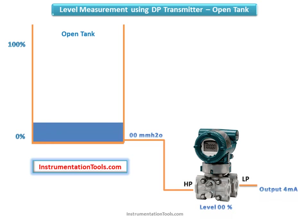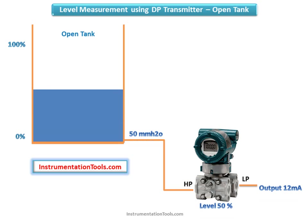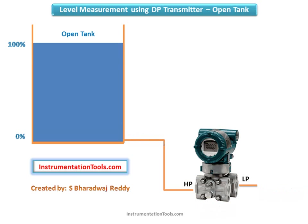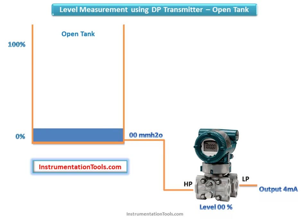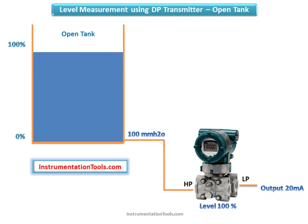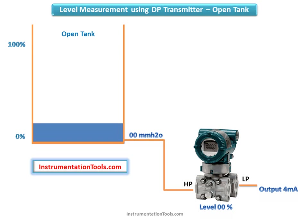Differential pressure level measurement uses a DP transmitter installed at the bottom of the tank whose level is to be measured. In open tanks, only the high pressure end of the DP transmitter needs to be connected, while the low pressure end is open to the atmosphere. The differential pressure therefore equals the hydrostatic head or weight of the fluid in the tank.